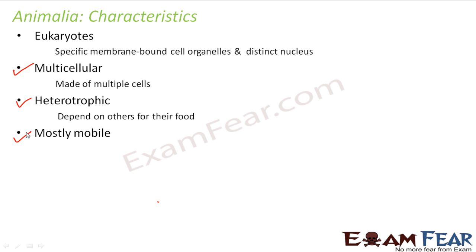Most animals are mobile. I would not say all, but most of them are. Unlike plants, which cannot move from one place to another and remain at one fixed place, most animals are capable of moving from one place to another, though there are a few exceptions. Also, cell walls are absent in animal cells. Comparing an animal cell with a plant cell — plant cells have an additional cell wall for protection and turgidity, but in animals, that extra cell wall is absent.